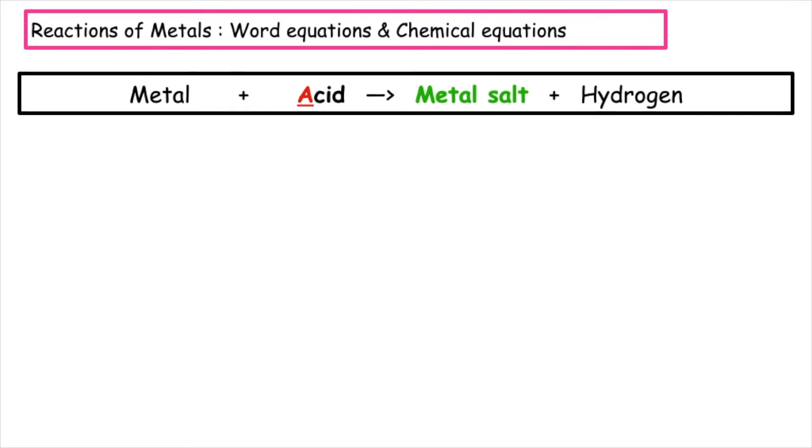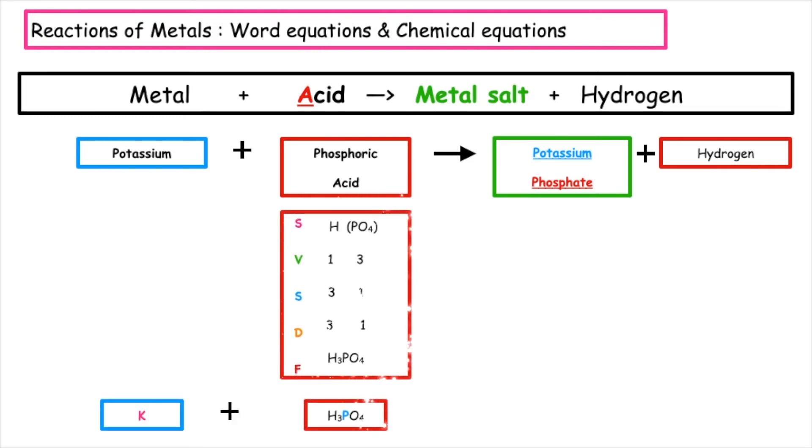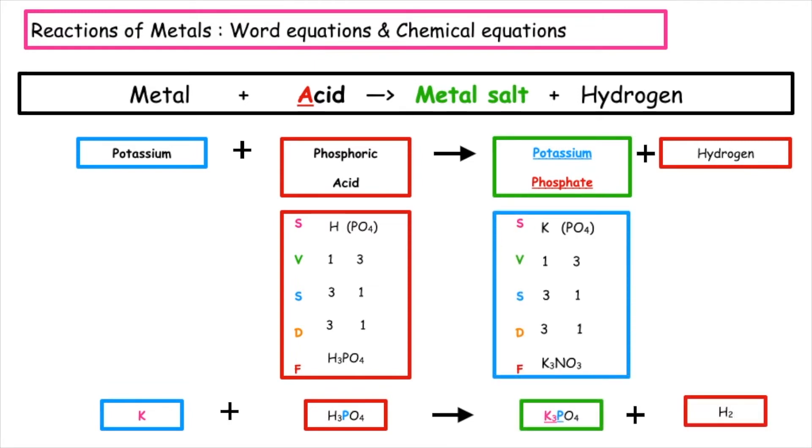In the next example, if we were to take potassium and react it with phosphoric acid, this would result in the salt potassium phosphate being formed and hydrogen gas. The formula for potassium phosphate is K3PO4 and this fertiliser would contain the elements potassium, K and phosphorus, P.